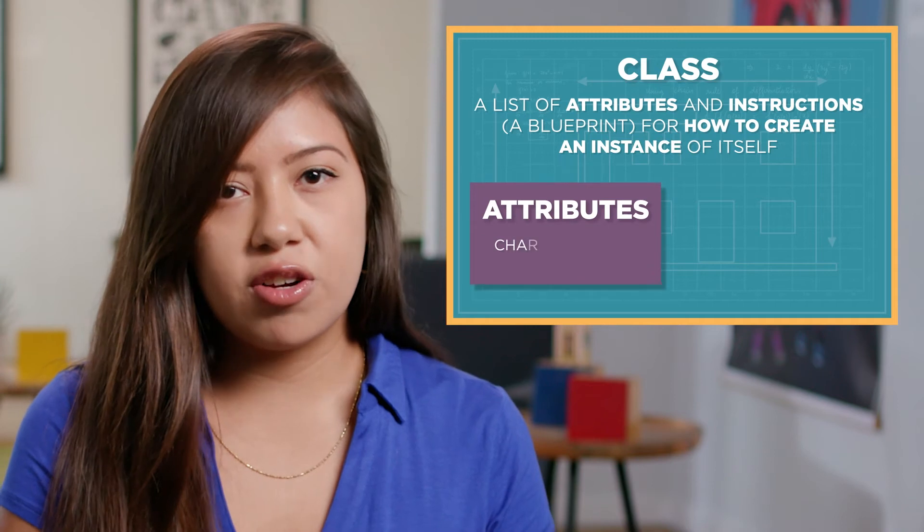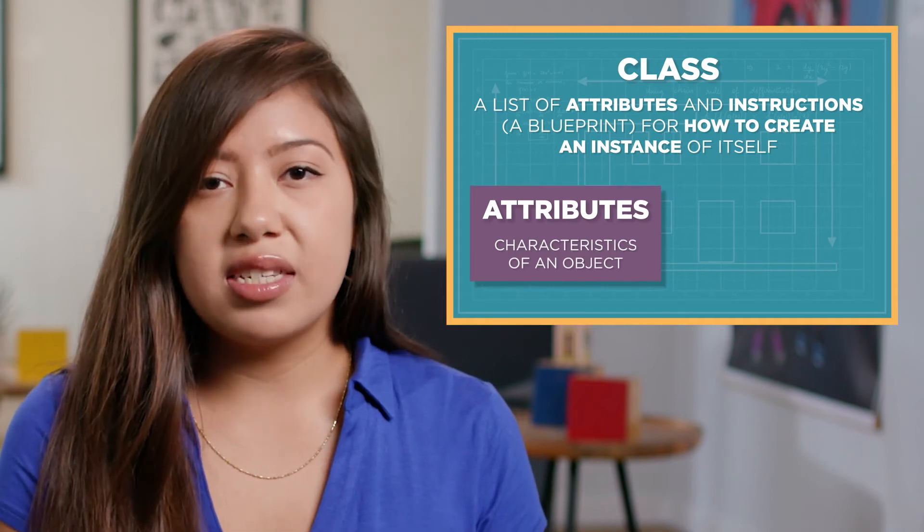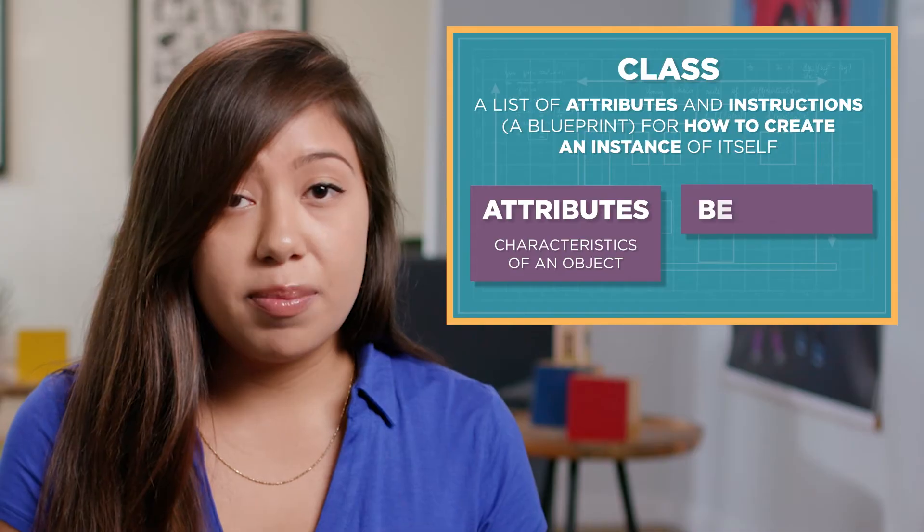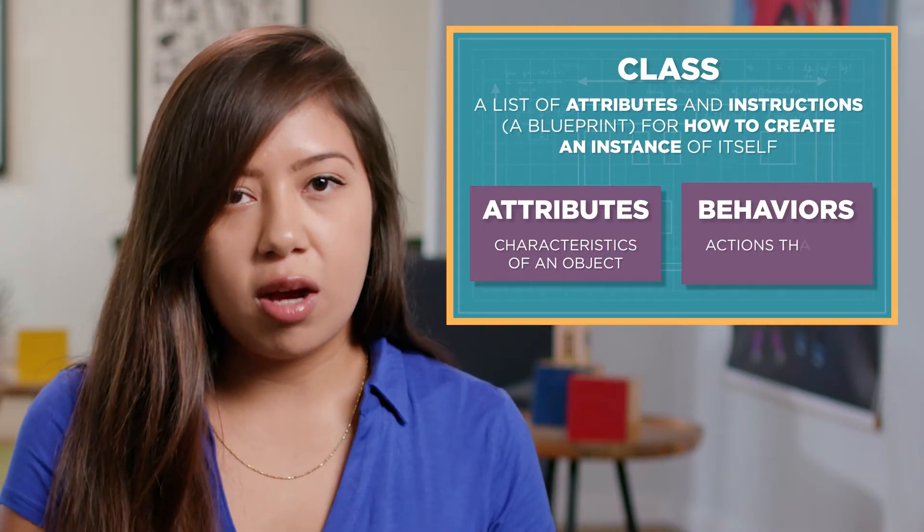An attribute is a characteristic of an object. Classes can also define the behaviors for an object. A behavior is an action that an object can perform.